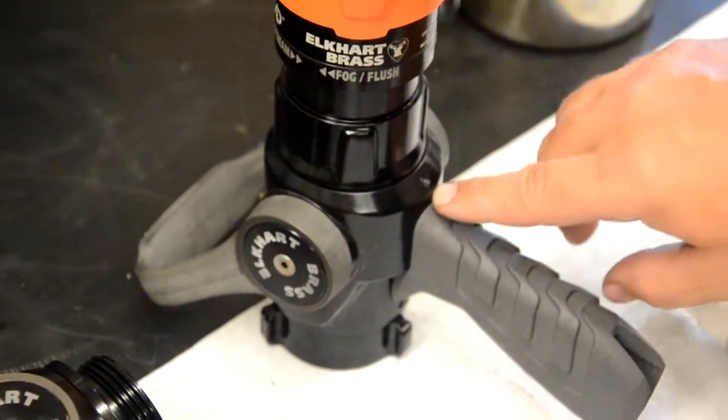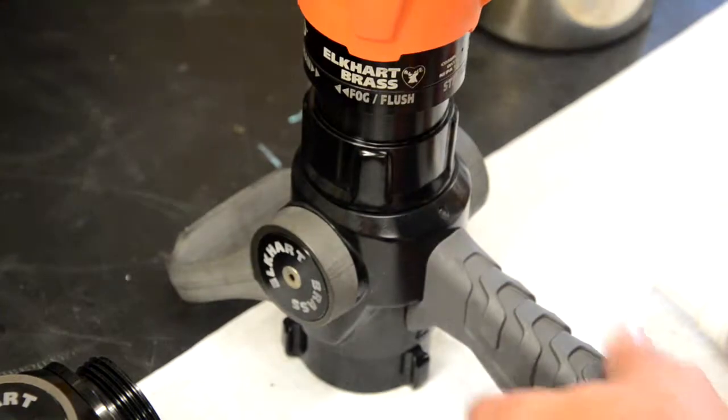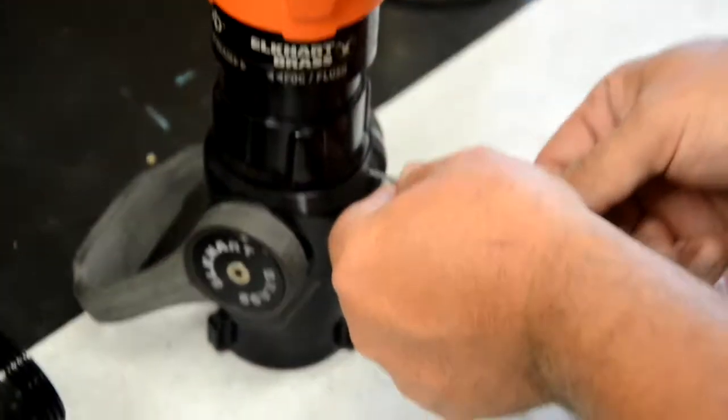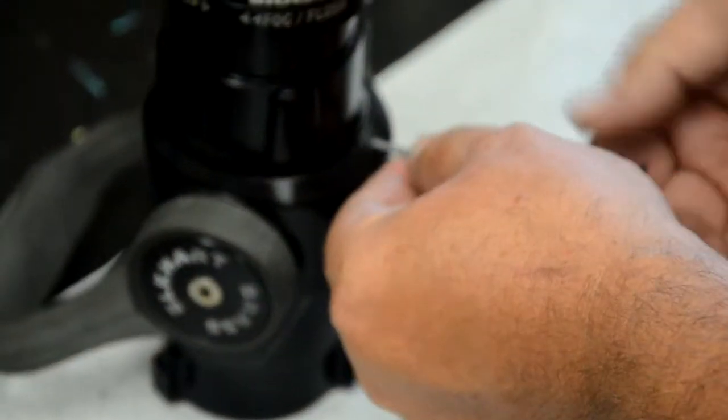Step 1. Remove the set screw located on the bottom of the discharge side of the shutoff body. Set aside and save this screw, as it'll be used during reassembly.